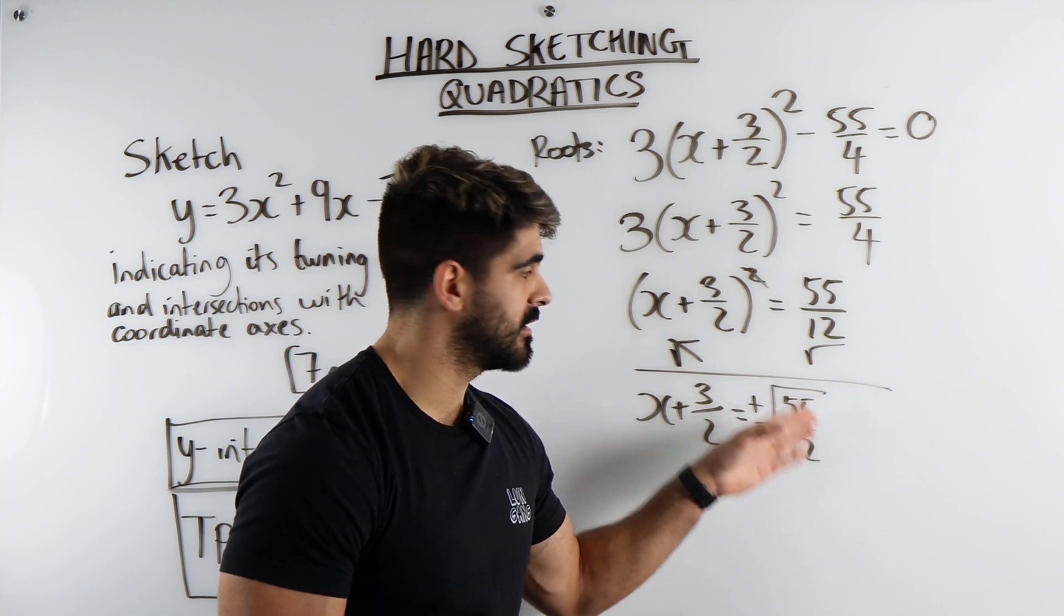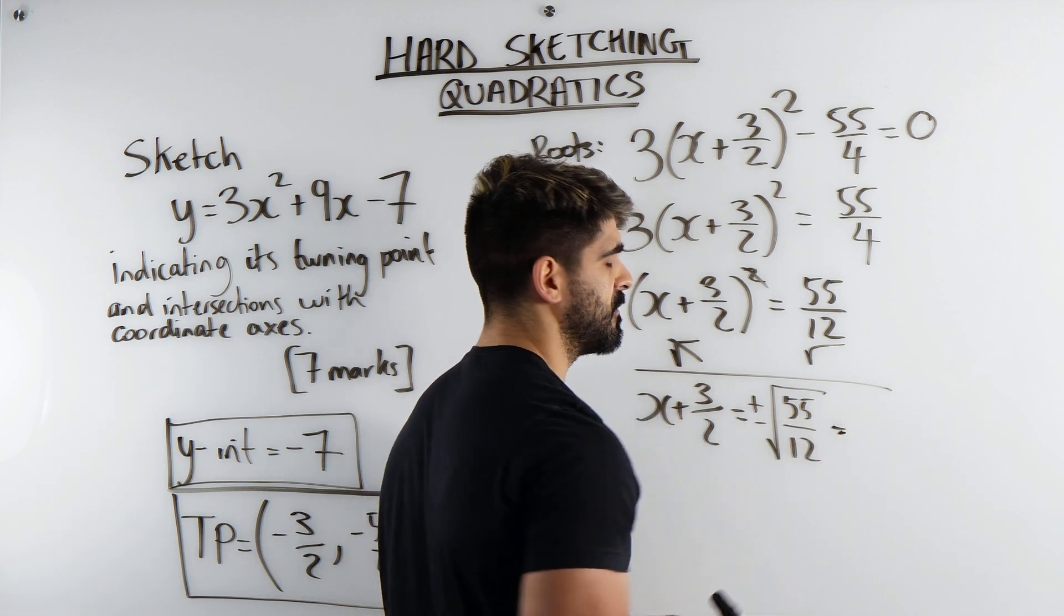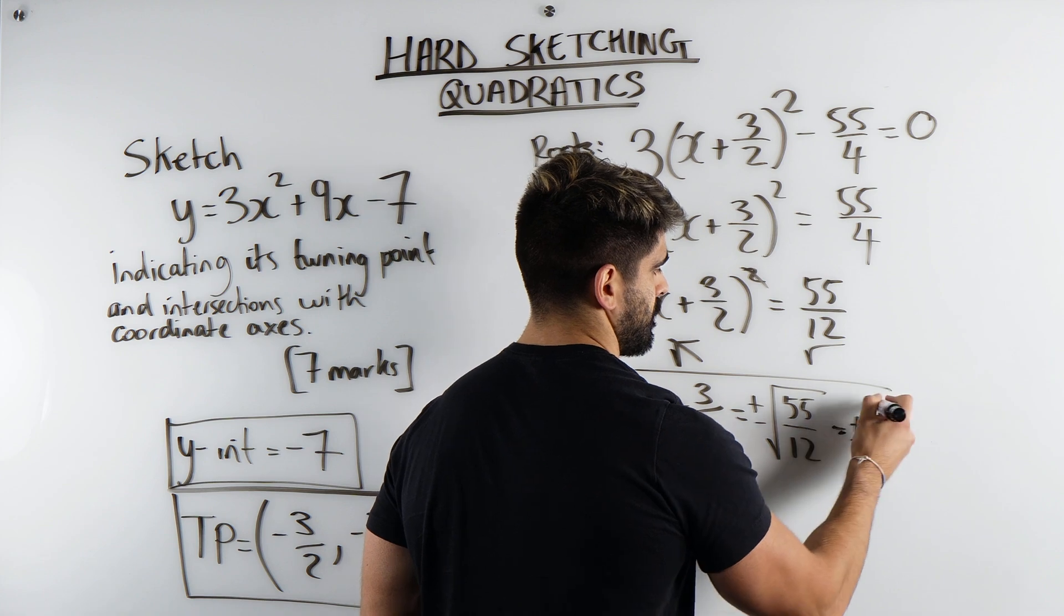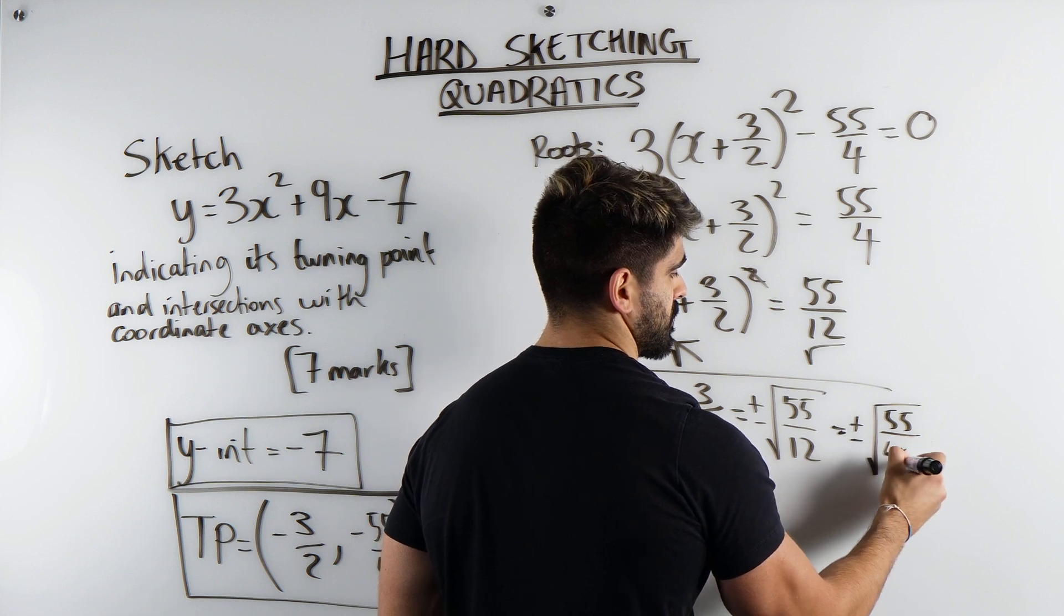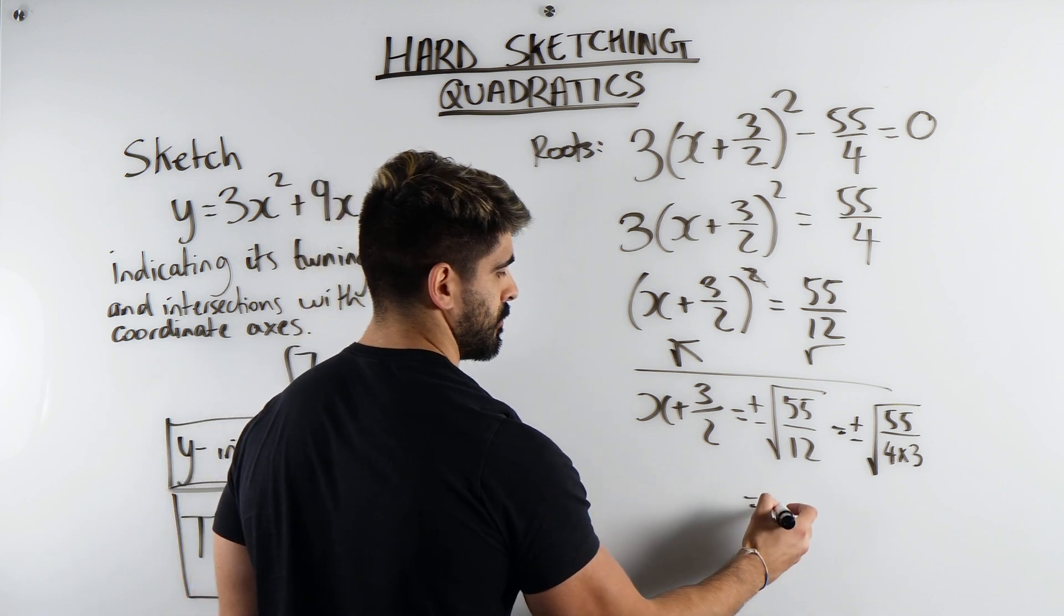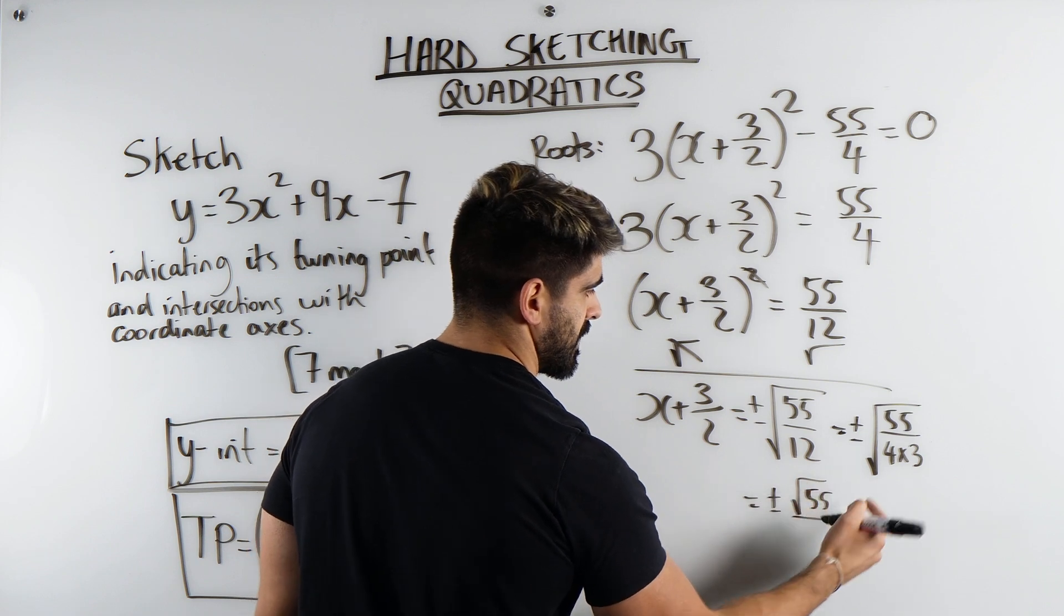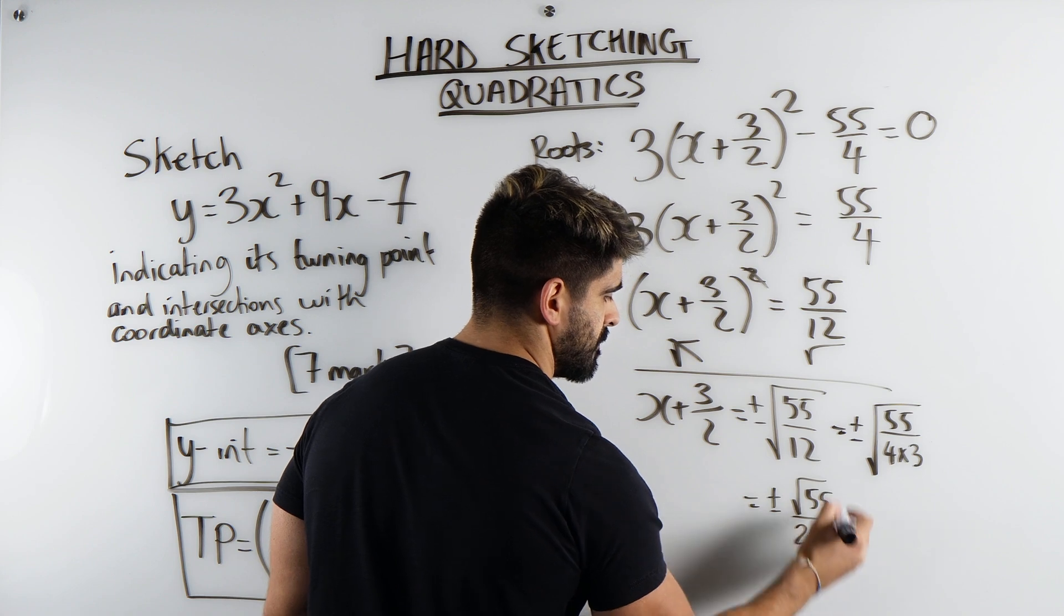So how would we simplify this surd? Well, I would think about the 12. 55 has no square numbers that go into it, but 12 does. So it would be 55/12, which is 4 times 3. So if we break that up, we get ±√55 divided by √4, which is 2, then we'll have √3. And now we can rationalize that by timesing top and bottom by √3. √3 times √3 is 3. 3 times 2 is 6.